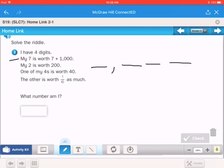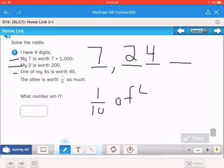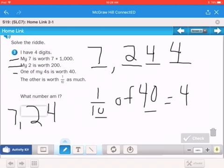So again, I like just putting the lines out for the four digits. My 7 is worth 7 times 1,000. So that goes in the 1,000s place. My 2 is worth 200. That would fall right there. One of my 4s is worth 40. That would be that. And the other one is worth 1/10th of 40. So if you've divided 40 by 10, you would get 4.